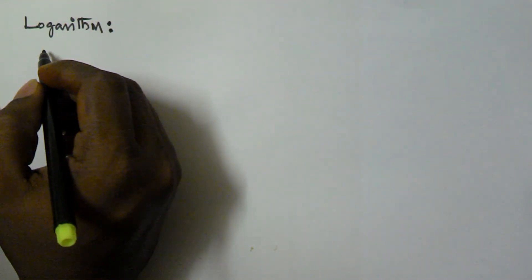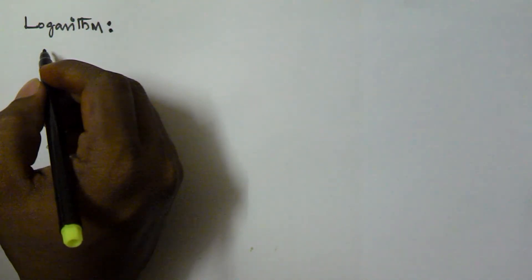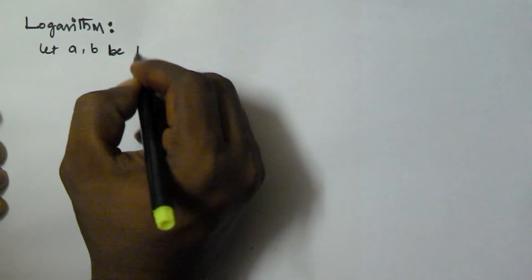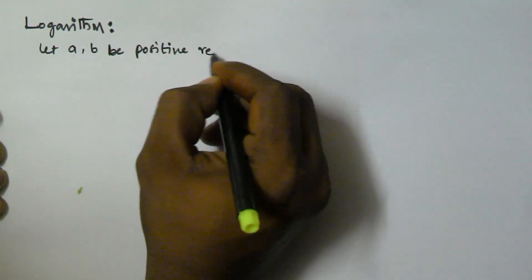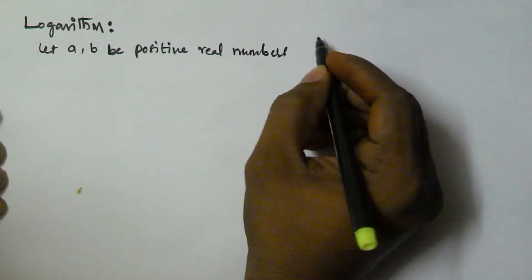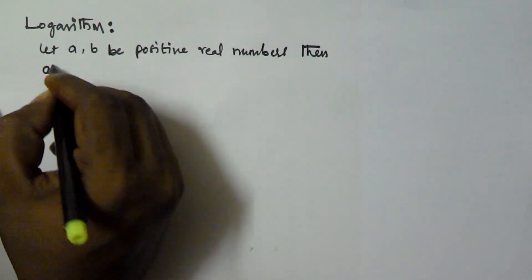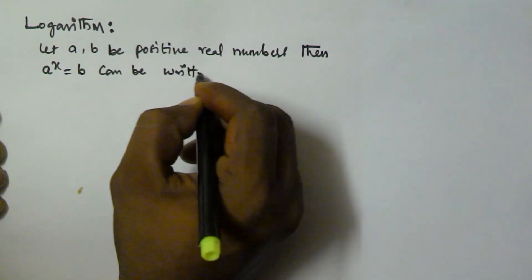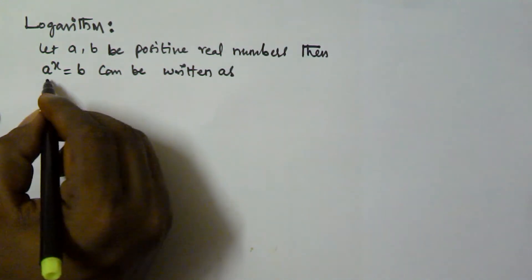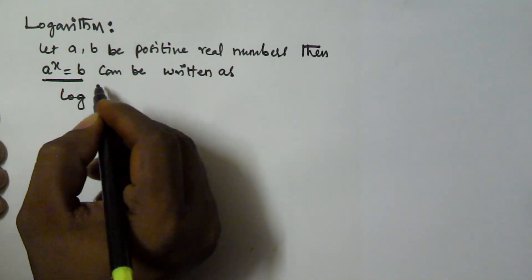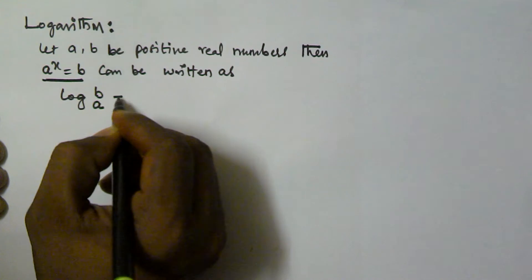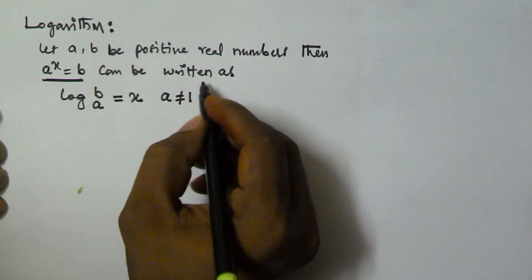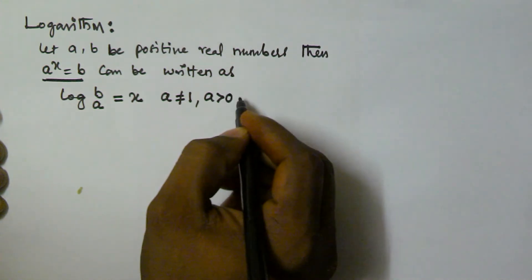In this video we will see the definition of logarithm. Let a and b be positive real numbers. Then a to the power of x is equal to b can be written as log b base a is equal to x, where a is not equal to 1, a is greater than 0, and b is also greater than 0.